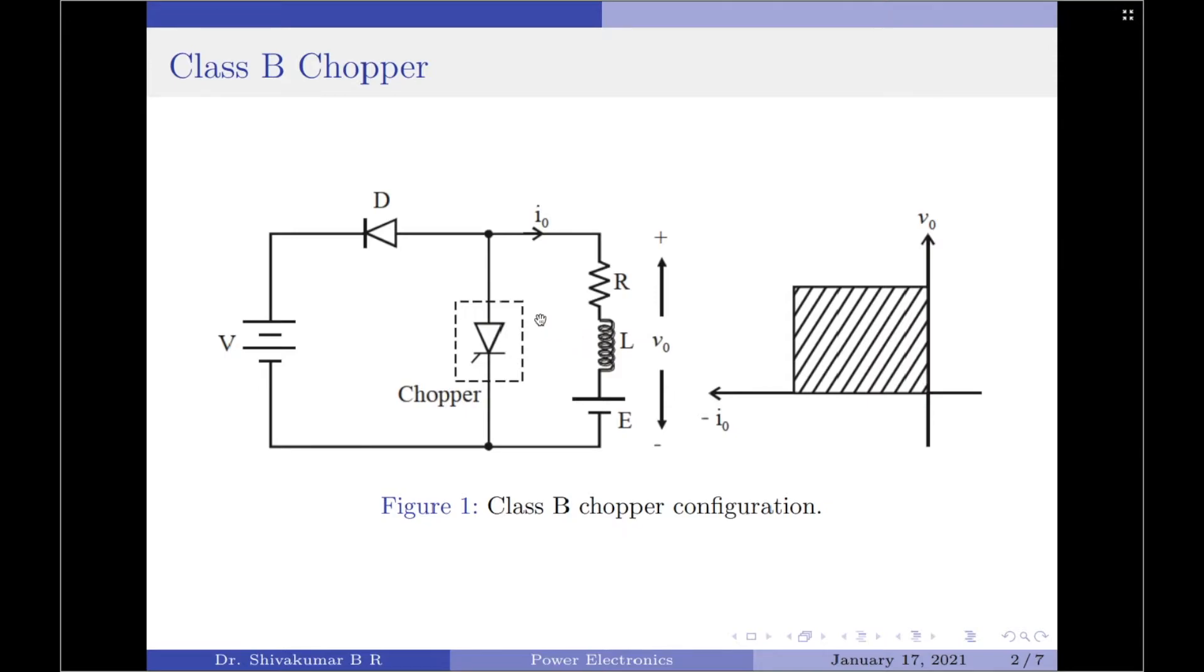On the other hand, when the chopper switch is opened, the load voltage, which is the sum of the battery E plus the voltage across the inductor, will be more than the source voltage Vs. Because of this, the diode D will be forward biased and begins to conduct.